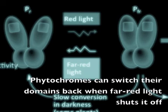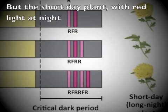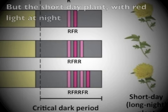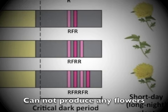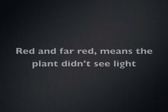Phytochromes can then switch their domain shape back when far red light shuts it off. But the short-day plant with red light at night cannot produce any flowers. Long day plants make flowers — just a flash of red light. Red and far red means the plant didn't see the light anymore.